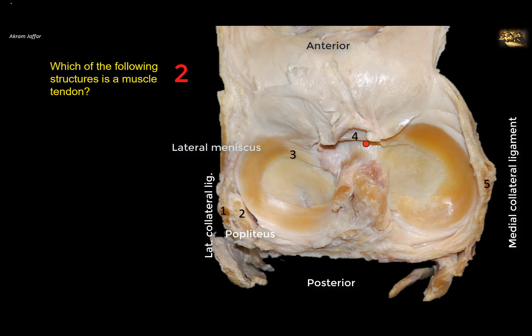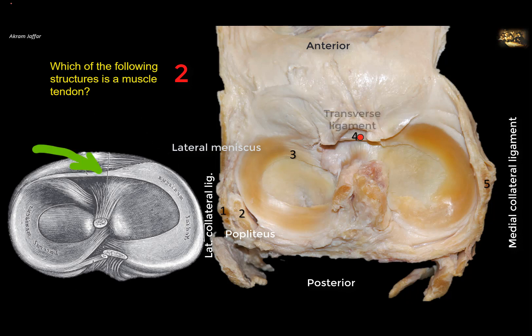What remains is number 4, which is a transverse ligament that attaches the anterior horns of the lateral and medial menisci — it is not a tendon of a muscle. You can also see the stump of the anterior cruciate ligament and the stump of the posterior cruciate ligament, attached to the anterior and posterior intercondylar areas of the tibia respectively.